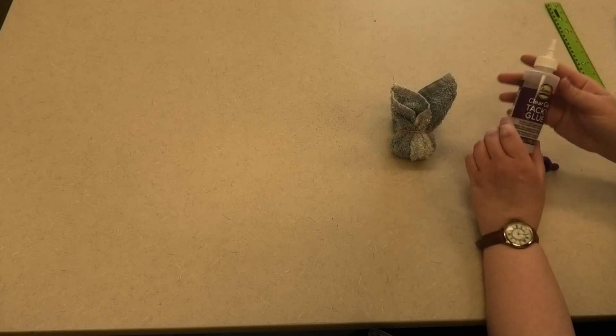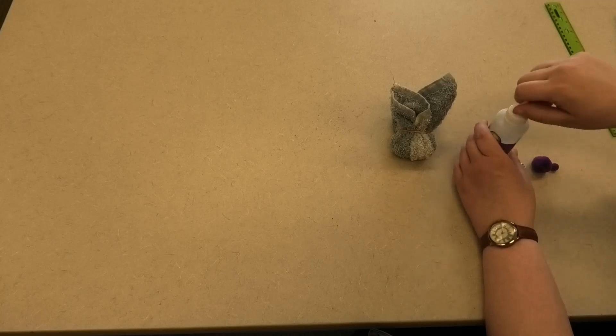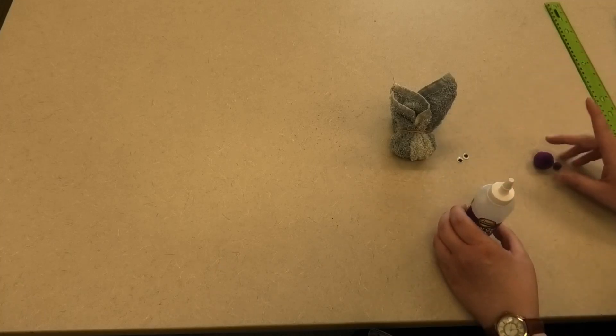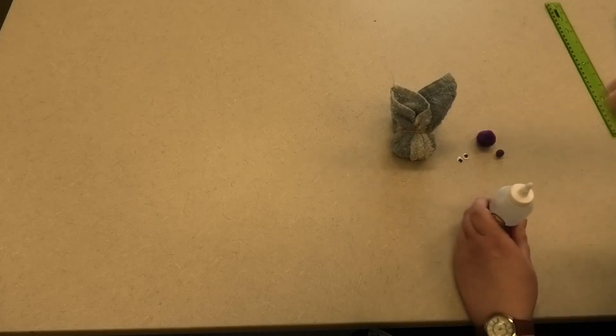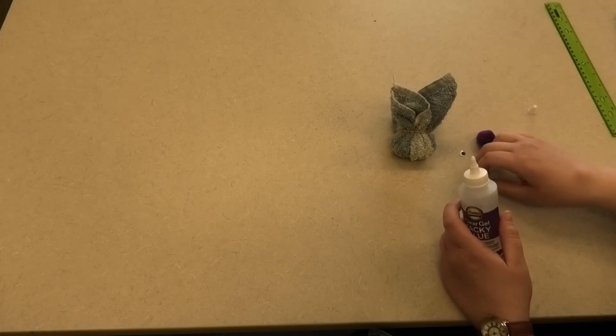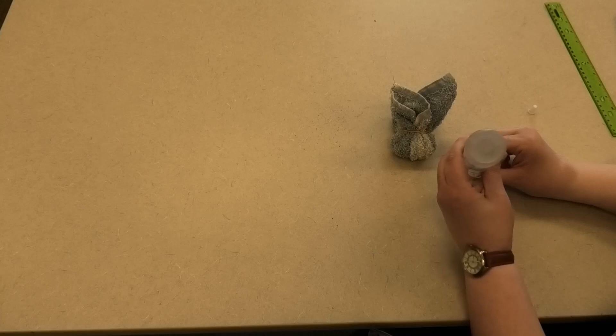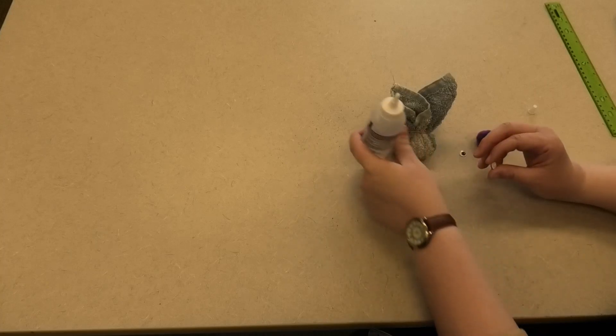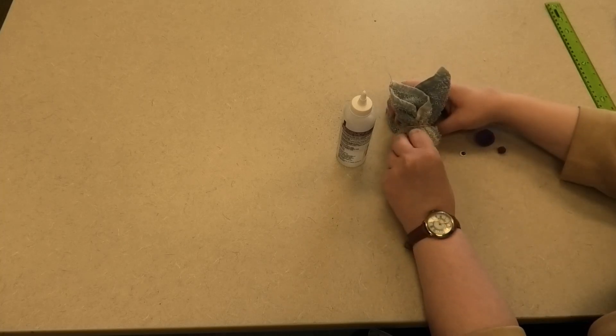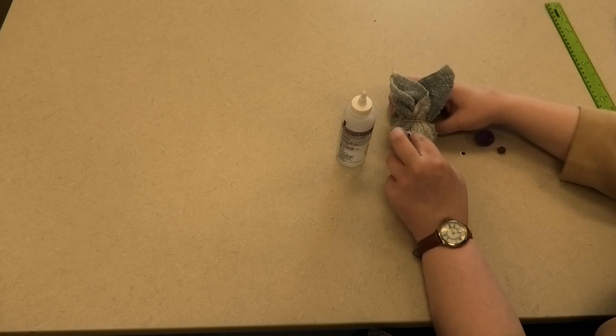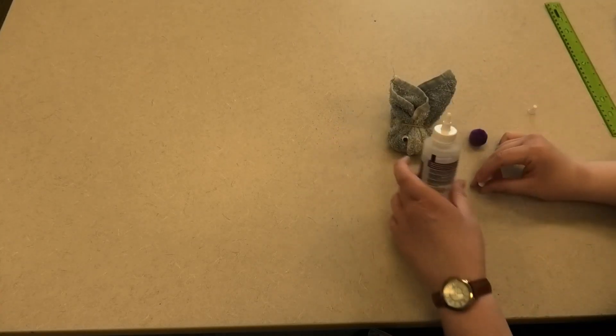Just grab some fabric glue or tacky glue. I've got a clear tacky glue here. And I'm going to use a couple of little googly eyes and a couple of little pom-poms, one smaller and one bigger. So I'm just going to go ahead and put some glue on the back of one eye. And then go ahead and stick it on the bunny's face. It doesn't have to be exact, just kind of a rough approximation. I'm going to go ahead and do the same thing with the other eye.